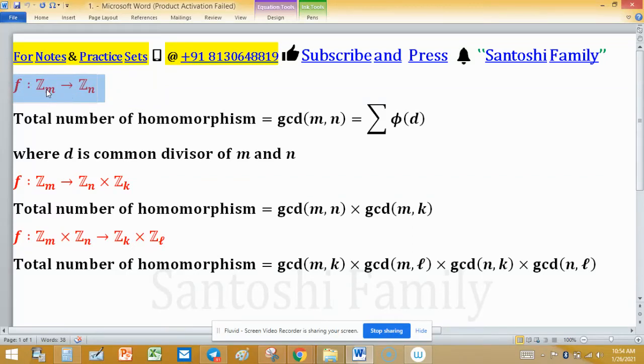Let f be a function defined from Zm to Zn. To find the total number of homomorphisms, you can use gcd(m,n) or the sum of φ(d) where d is a common divisor of m and n.